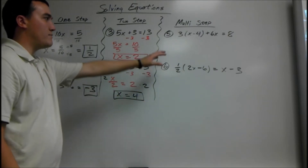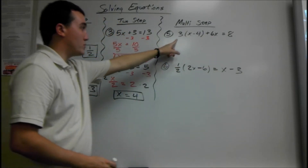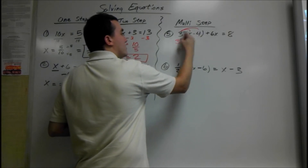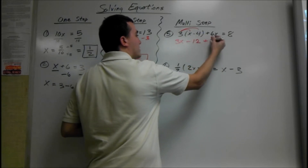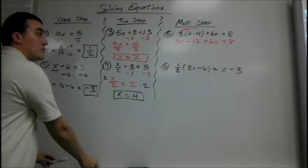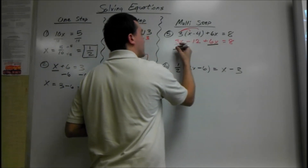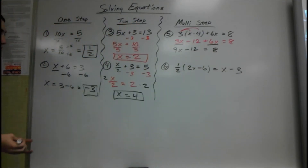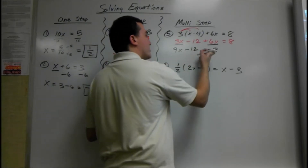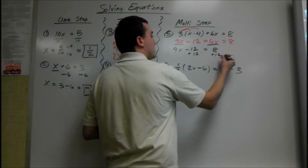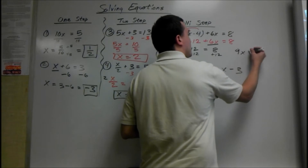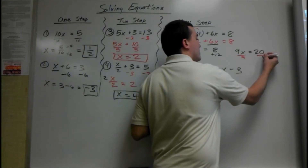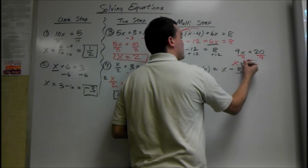Multi-step equations usually have multiple terms with x in them. The first thing you always want to do, if you can, is distribute. So always distribute first. This 3 is going to go to the x and the negative 4: 3 times x is 3x, 3 times negative 4 is negative 12, plus 6x. Then we combine like terms: 3x plus 6x is 9x, minus 12 equals 8. We add 12 to both sides, giving us 9x equals 20. Then we divide by 9, so x equals 20 over 9.